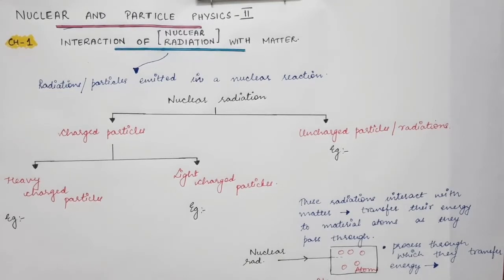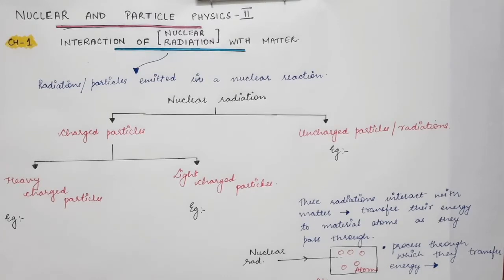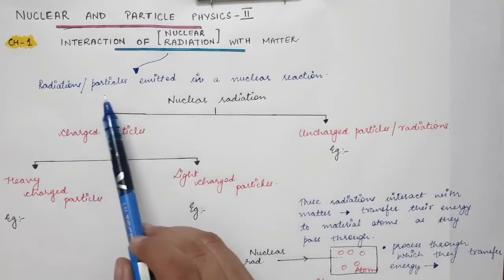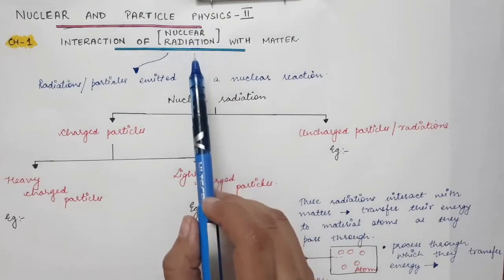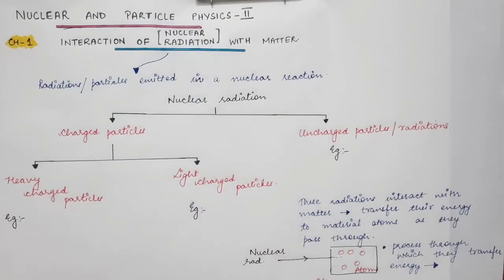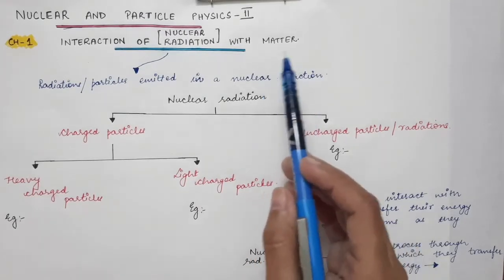In this series, Nuclear and Particle Physics Part 2, which is a subject for sixth semester BSc non-medical students, we will discuss how nuclear radiations interact with matter. The radiations or particles emitted in a nuclear reaction are termed as nuclear radiations. In the first chapter, we will discuss the interaction of nuclear radiation with matter.